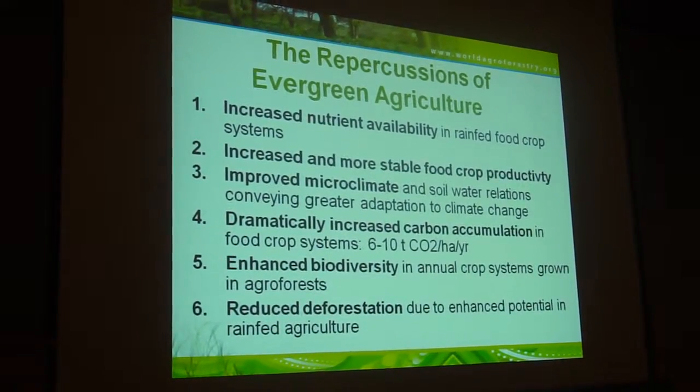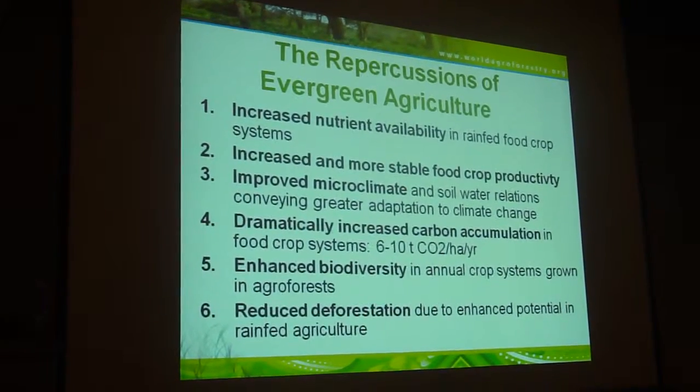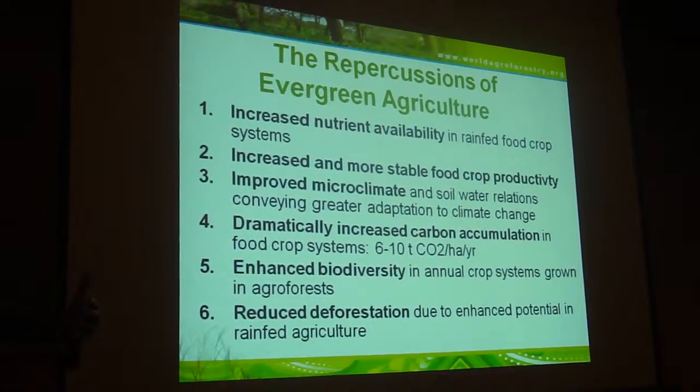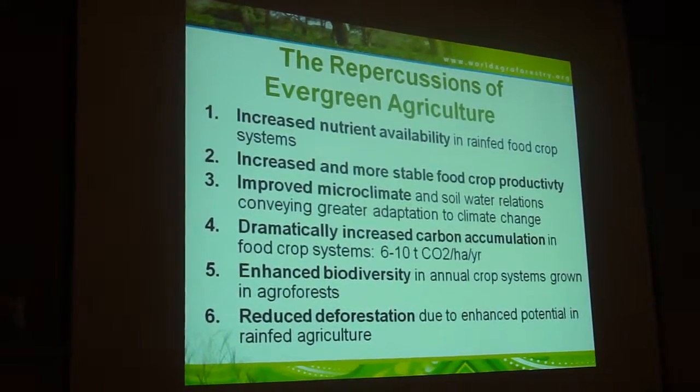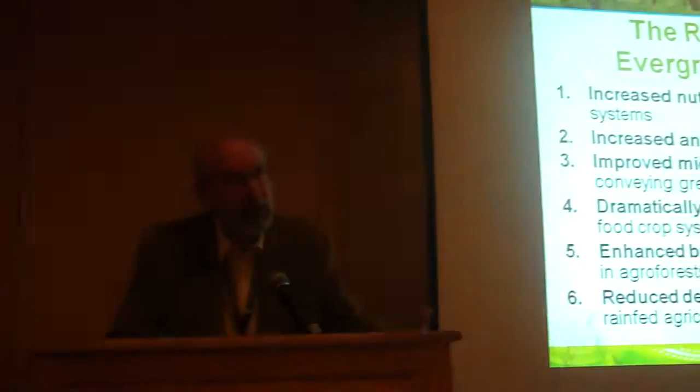Enhanced biodiversity is another major effect — when you have landscapes of monoculture food crops now being transformed into agroforest systems, you can look at corridors and vastly increased amounts of habitats and niches for wildlife and other species. There is also reduced deforestation due to the enhanced potential of rain-fed agriculture to produce higher yields and to produce the products that are causing deforestation in smallholder agriculture.